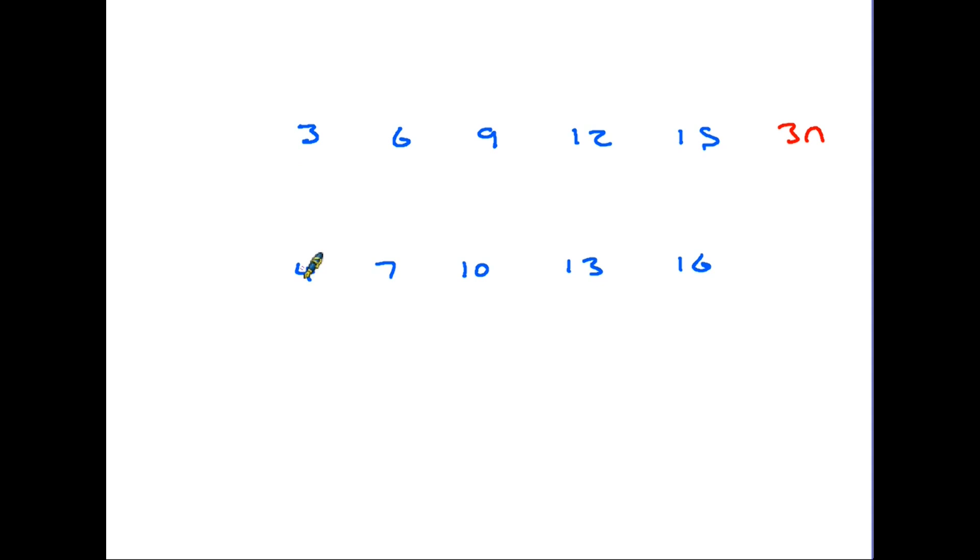We know the gaps are going up in 3s so the formula is 3n. However below that is another sequence 4, 7, 10, 13, 16. Now the gap in this sequence is also 3n but of course the two sequences can't have the same rule because quite clearly they have different numbers.